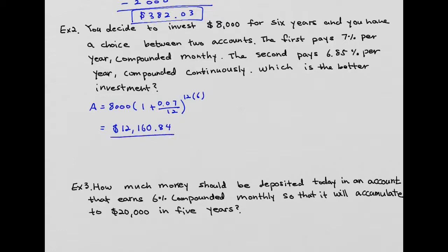When you input all that number, you will end up getting $12,164.84. We're going to compare this with the other one. The other one was compound continuously where amount equals principal times e to the rate 0.0685 times the year.